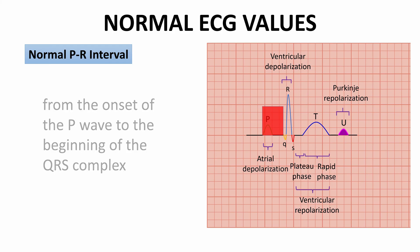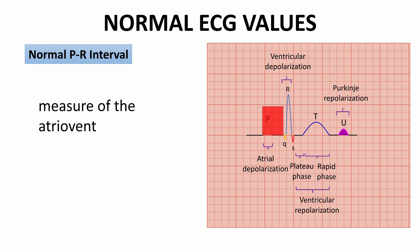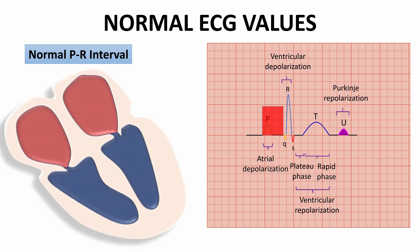The PR interval is a measure of the atrioventricular AV conduction time. Since the P wave represents atrial depolarization and the QRS complex represents ventricular depolarization, the PR interval measures the AV conduction time.